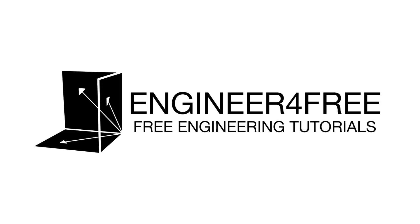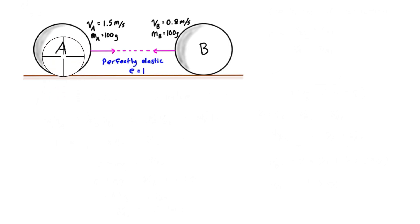All right, welcome back. I have a central impact example problem here where we have two bodies A and B moving towards each other. VA is 1.5 meters per second to the right. VB is 0.8 meters per second to the left. If you're taking the right to be the positive direction, then this is going to show up as a negative in our equations.